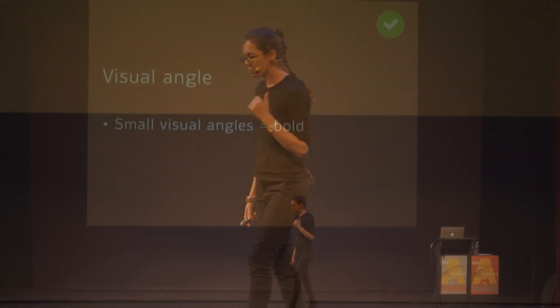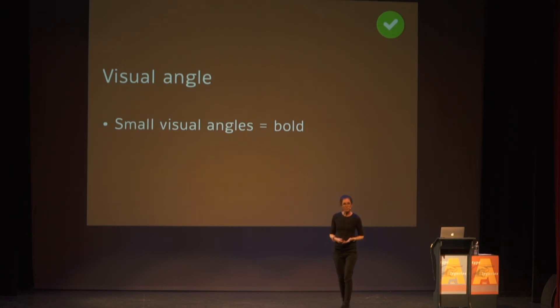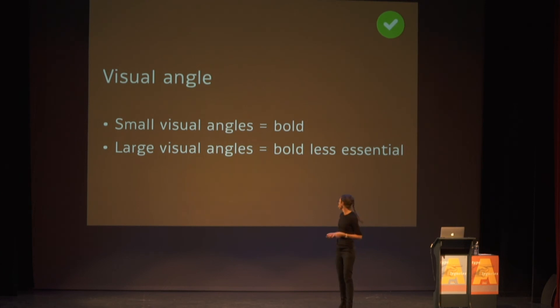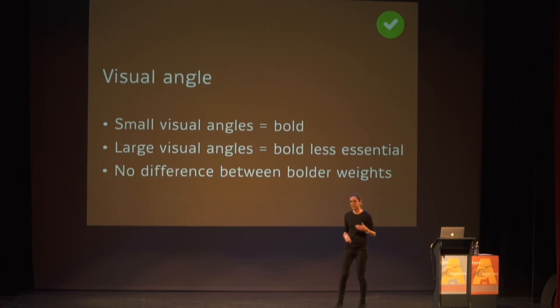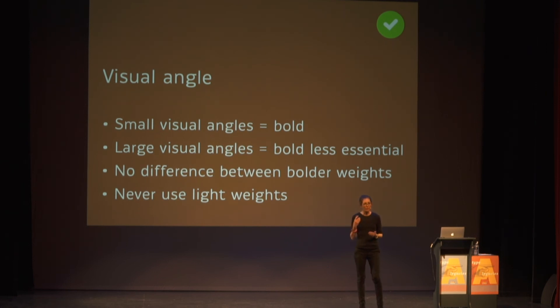That was the end of experiment two. To sum up: when working on signage, small point sizes, either on screen or in print, small sizes will always benefit from bolder weights. For larger visual angle sizes, boldness is not as essential. And as long as you have some boldness in your letters, you can use various ranges of boldness without lowering legibility. Finally, if you are concerned with high legibility, never ever use lighter weights.